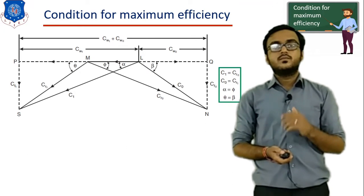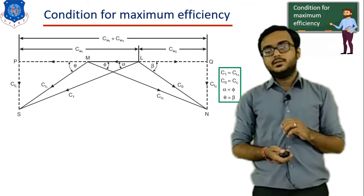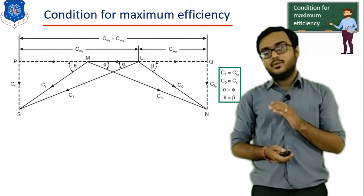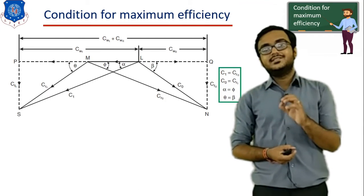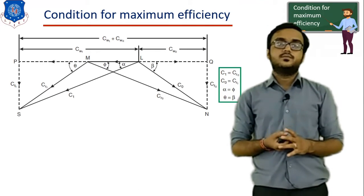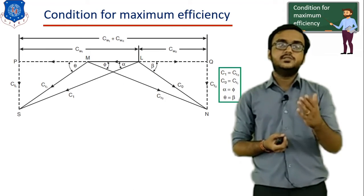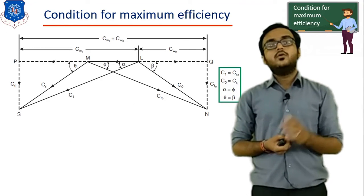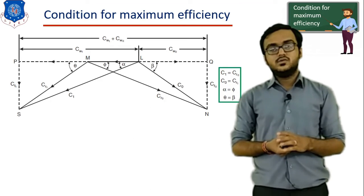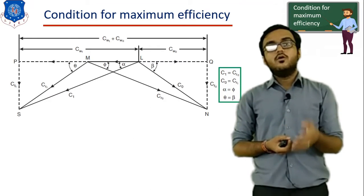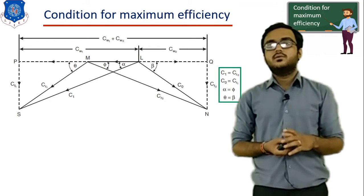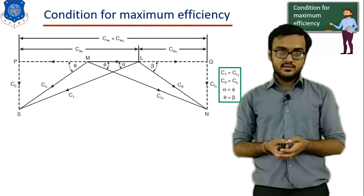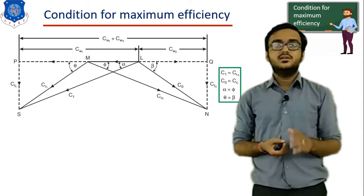Condition for maximum efficiency of Parsons Turbine. Before going to the derivation, let's define efficiency. Efficiency is equal to output divided by input. The work obtained from the turbine is the output, and the kinetic energy supplied — the energy supply to this stage — is the input.